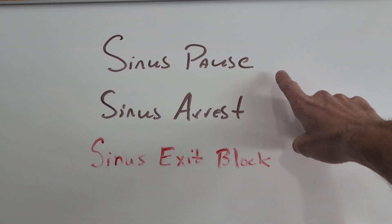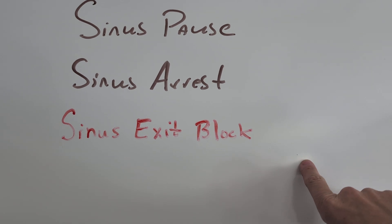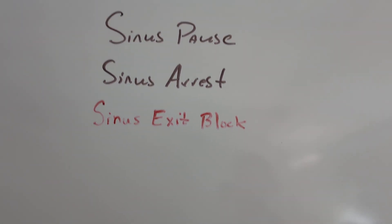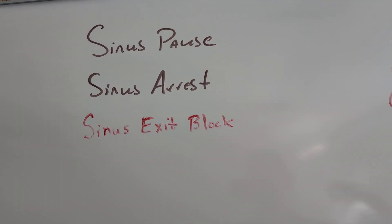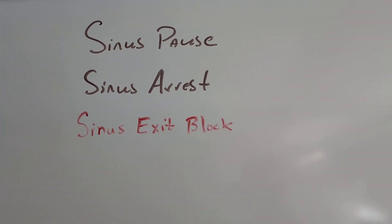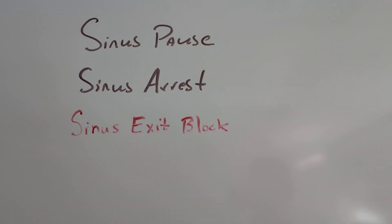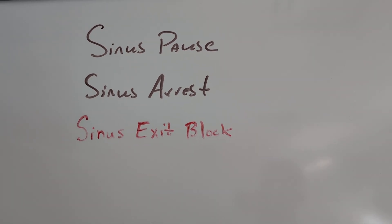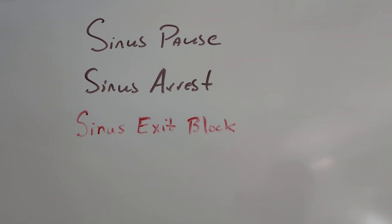Specifically, I'm going to talk about sinus pause, sinus arrest, and something called sinus exit block. These can be a little confusing, and they all result in pauses or cessation of sinus node activity when you analyze the ECG. And so they all kind of look like the same thing, and what's the difference between them?